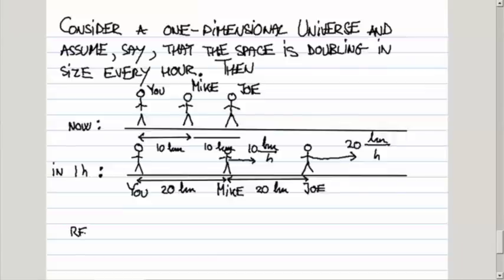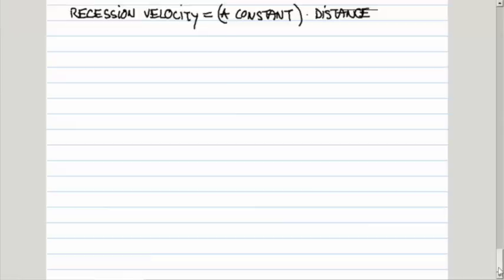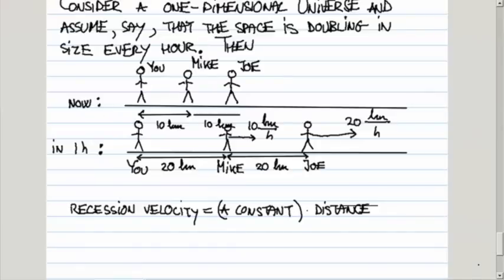So recession velocity of Mike and Joe, as observed by you, is proportional to, there is a constant times the distance between you and another person. So this constant in this toy example plays the role of Hubble's constant. And in our case here, it is basically equal to just one kilometer per hour per kilometer.